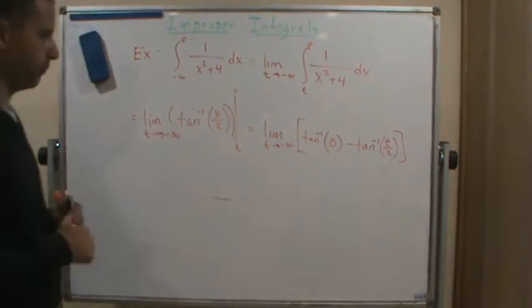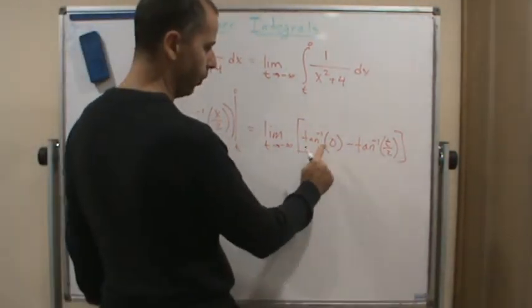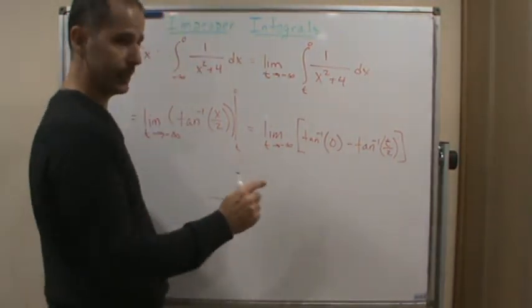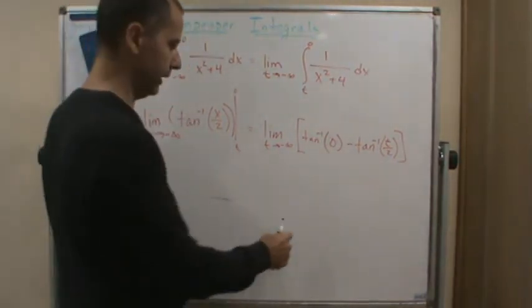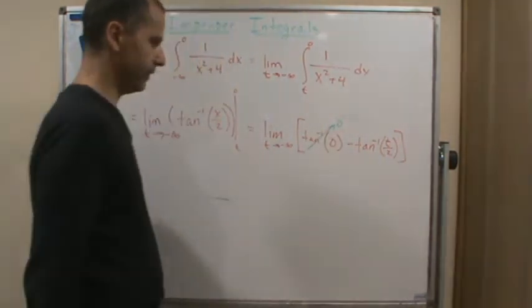Now we know for this we ask ourselves: the tangent of what angle equals 0? Well, that's going to be 0. So we know that this is going to be 0.